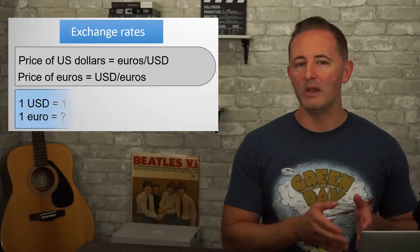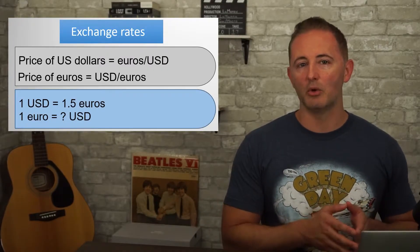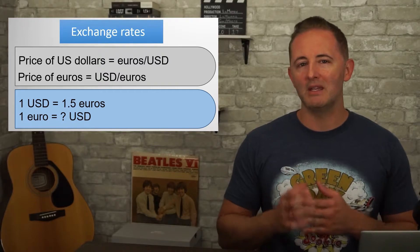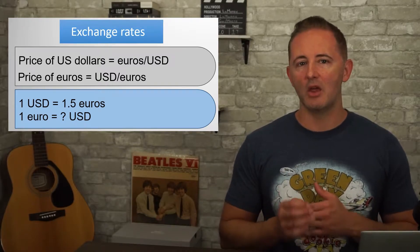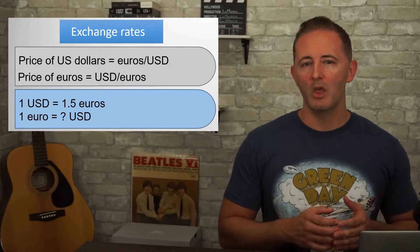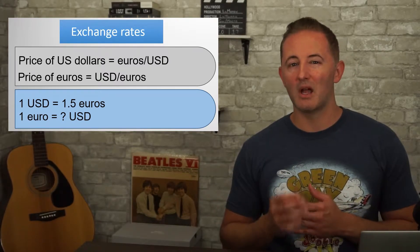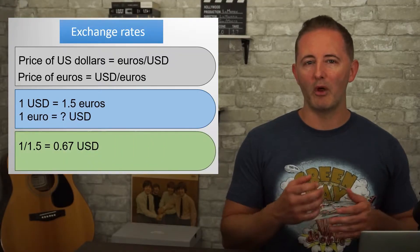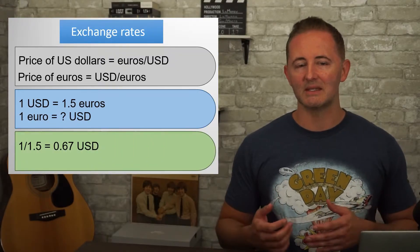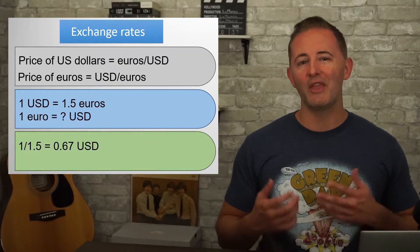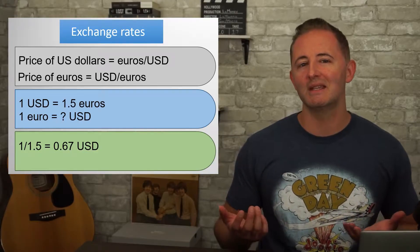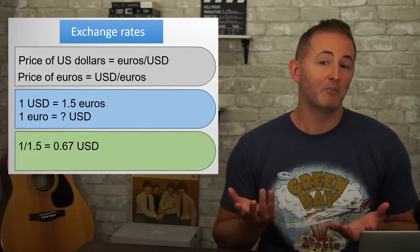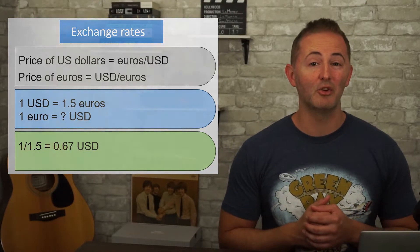Let's say that one US dollar equals 1.5 euros. If we want to know how many dollars it takes to get one euro, the euro price is dollars over euros, so it's 1 divided by 1.5, which equals 67 cents. The beautiful thing about exchange rates is that you're really just finding the reciprocal — that's all there is to it.